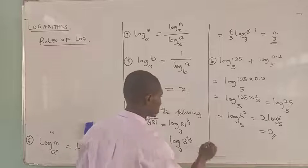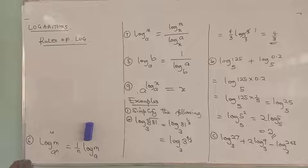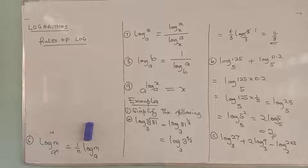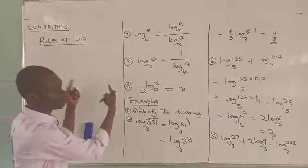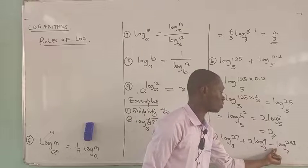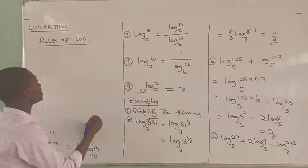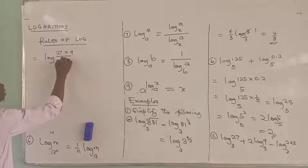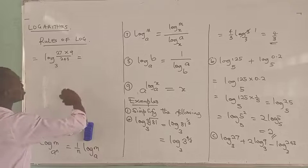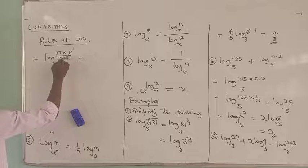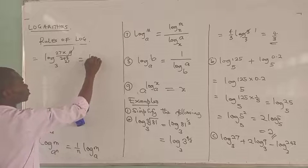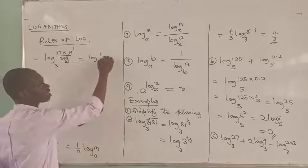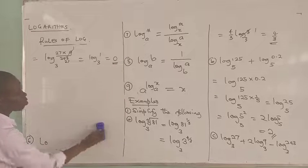The third example says: simplify log 27 base 3 plus 2 log 9 base 3 minus log 243 base 3. Apply the rules: addition changes to multiplication, subtraction changes to division — since all have the same base. This gives log of 27 times 9 squared divided by 243, all in base 3. 9 into 243 gives 27, and 27 into 27 is 1. So you get log 1 base 3. The rule says log 1 to any base equals 0, so the answer is 0.